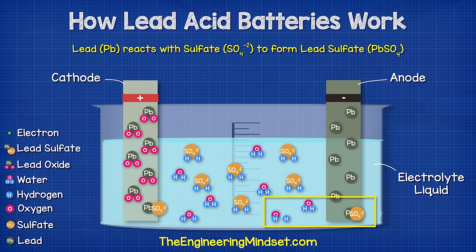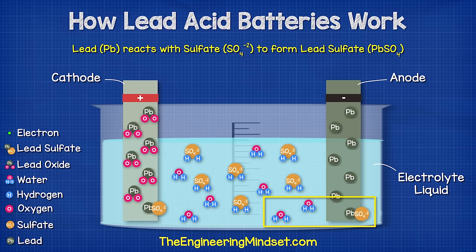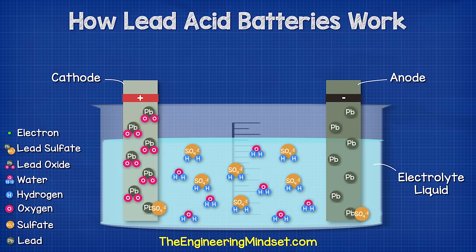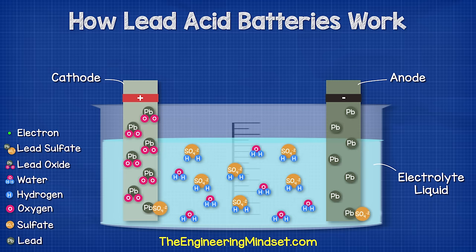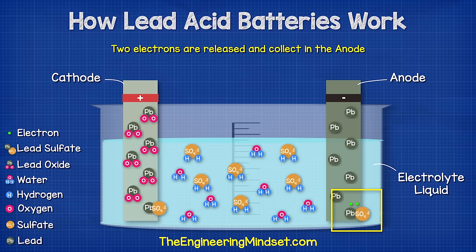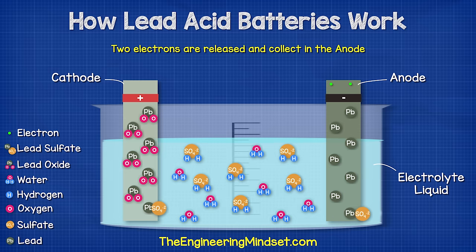At the same time, the lead atoms on the anode are going to react with the sulfate ions in the electrolyte. This reaction will create a layer of lead sulfate around the electrode. During this reaction two electrons are released and collected in the negative terminal.